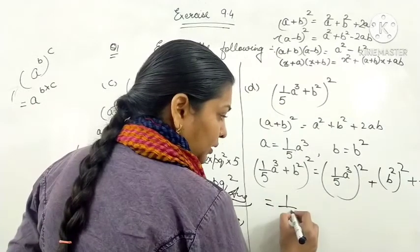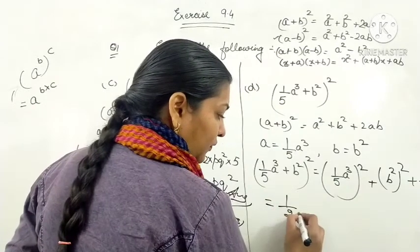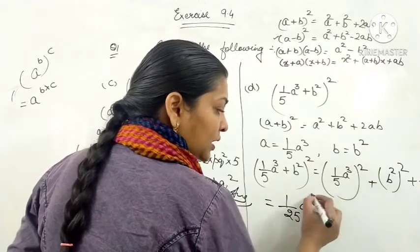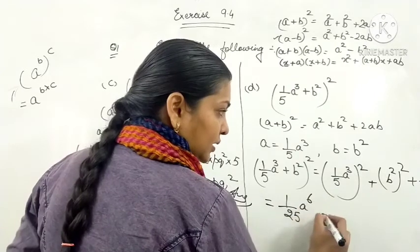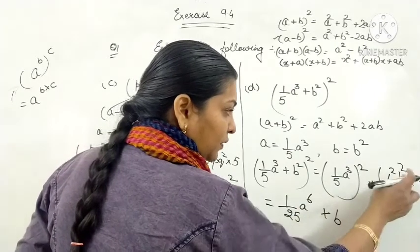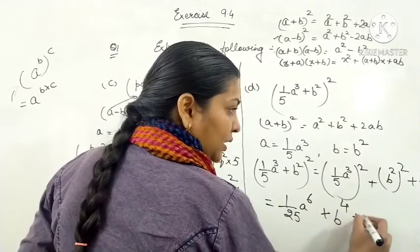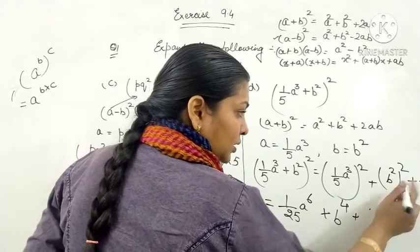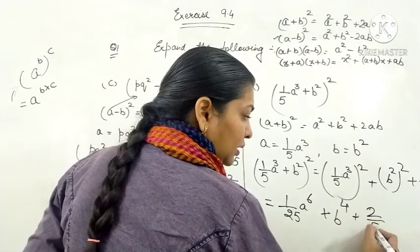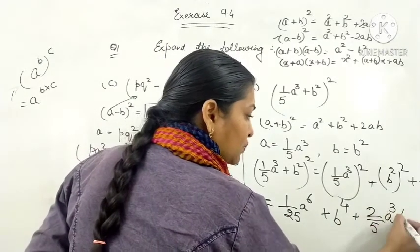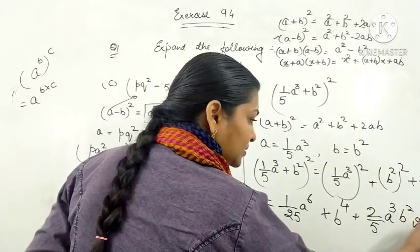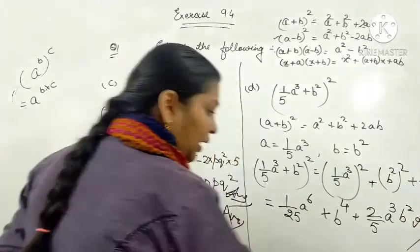This equals 1 by 25 A raised to the power 6, plus B raised to the power 4, plus 2 by 5 A cubed B squared. This is your answer.